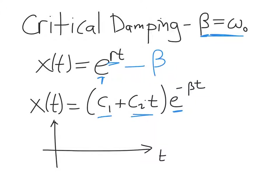Depending on the initial conditions, we can imagine an oscillator starting with some non-zero displacement. Depending on the relative values of c₁ and c₂, you can have a solution that damps out and hits zero. You might ask: why would we even be interested in a system with critical damping? Critical damping is actually really important for control systems.